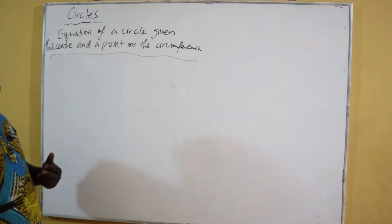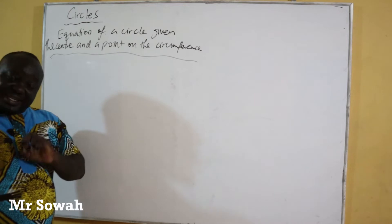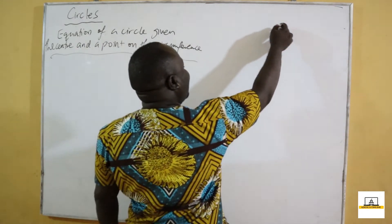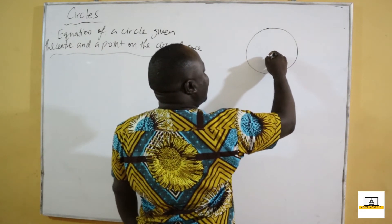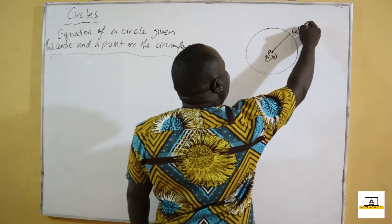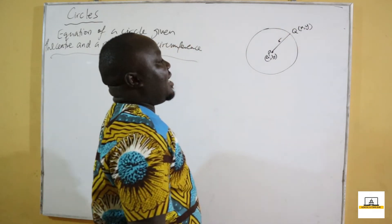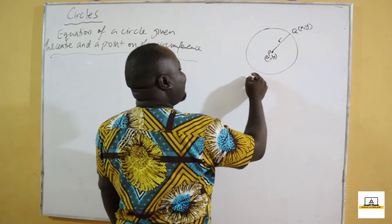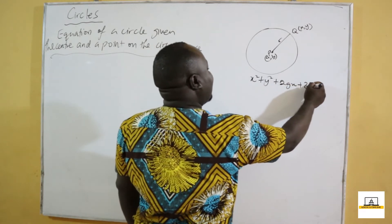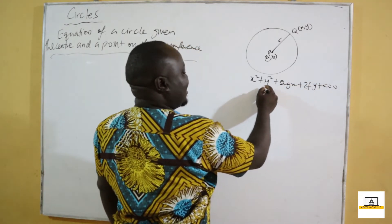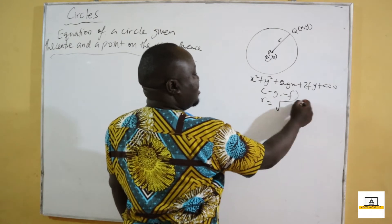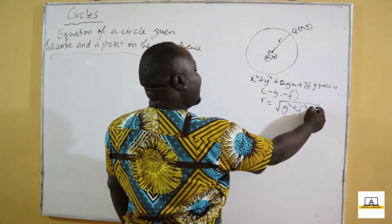Our next topic is finding the equation of a circle when we are given the center and a point on the circumference. Remember that from the center to a point on the circumference is the radius. The general equation of a circle is X squared plus Y squared plus 2GX plus 2FY plus C equals zero. Our center is (-G, -F), and the radius is equal to the square root of G squared plus F squared minus C.